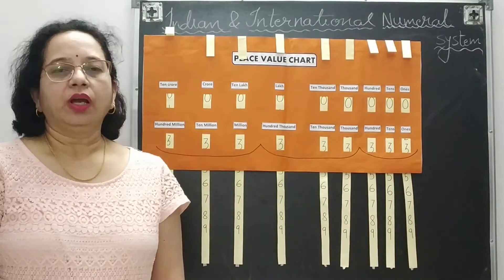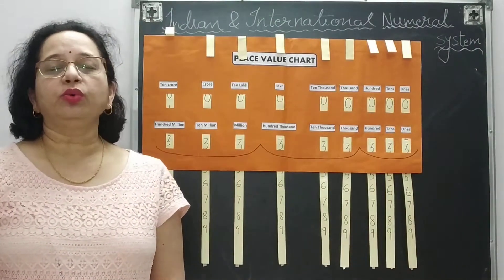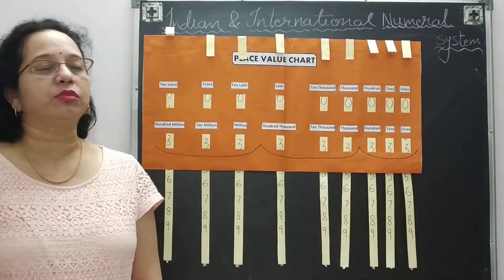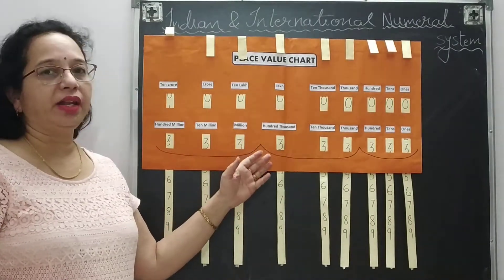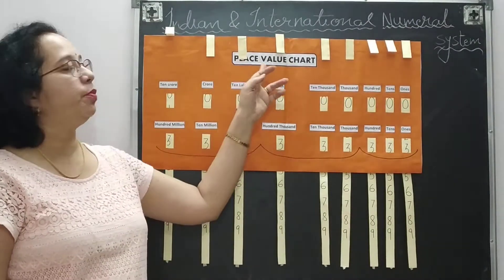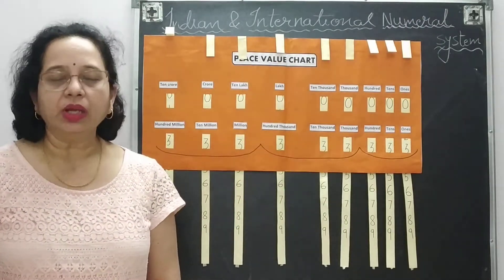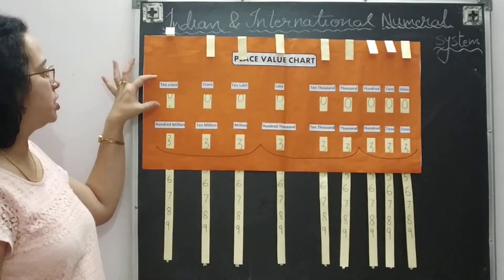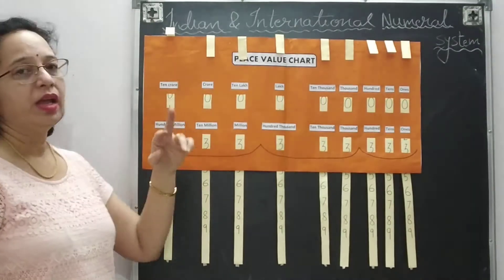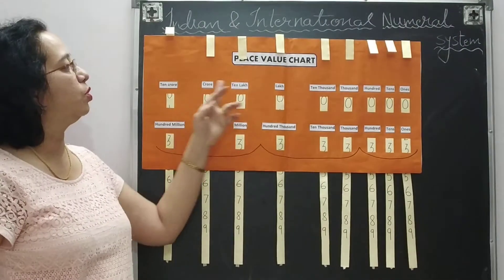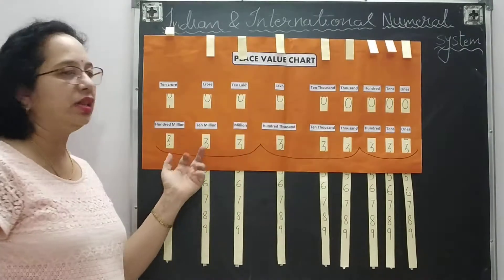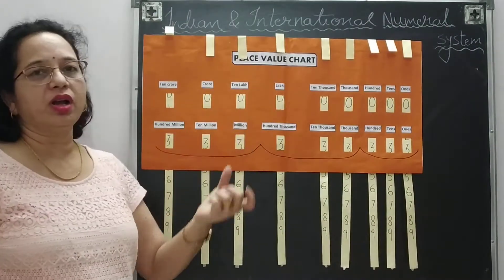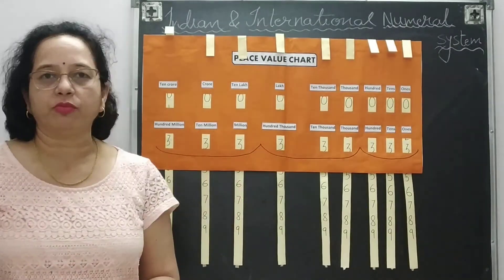Hello friends, today I am going to explain how to read numerals in the Indian and international number systems using an activity, or we can say using a place value chart. The first one is the Indian number system because the word 'crore' and 'lakh' are given, and the second one is the international number system with the word 'million'.